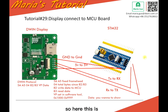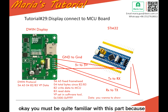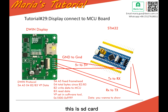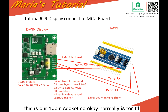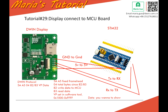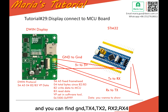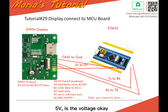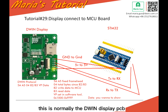Here is a screenshot of the D1 PCBA. You must be quite familiar with this part because this is the SD card. This is our 10-pin circuit, normally used for TTL, and you can see the holes here. You can find GND, TX4, TX2, RX2, RX4, and 5V — 5V is the voltage. This is normally the D1 LCD display PCB layout.